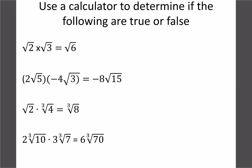Most people find multiplying and dividing a little bit easier than adding and subtracting because it makes more sense. Root 2 times root 3 gives you root 6 — that's definitely true. On your calculator, if you type in 2 root 5 times negative 4 root 3 and get the decimal answer, then check negative 8 root 15, you'll see those are the same. The negative 4 and 2 multiplied gives negative 8, and the 5 and 3 multiplied gives 15.